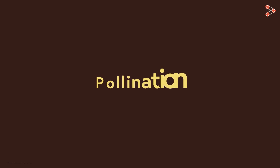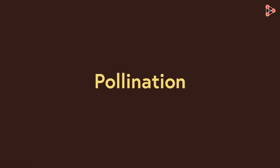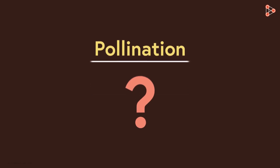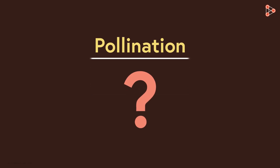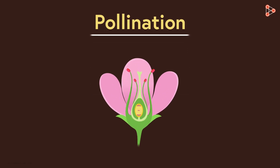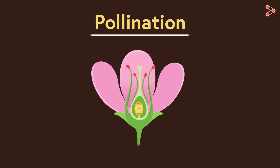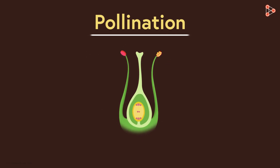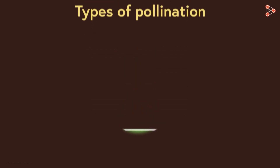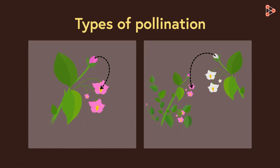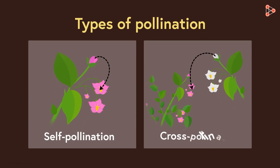In our previous video, we have taken a look at the process of pollination. Can you recall the process? This process occurs in flowering plants — the pollen grains are transferred from the anther to the stigma of the same or a different flower. We have also taken a look at the different types of pollination: self-pollination and cross-pollination.